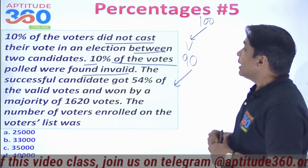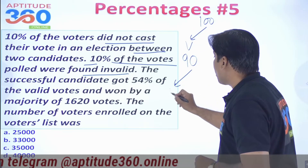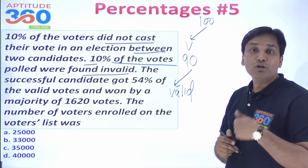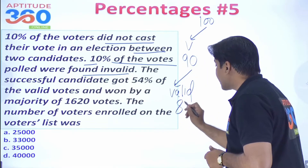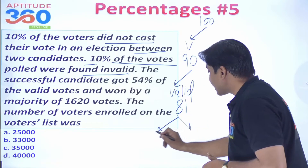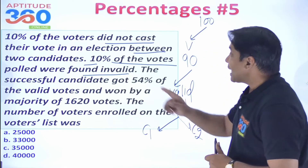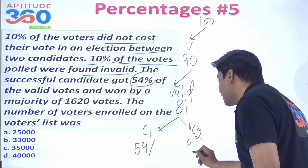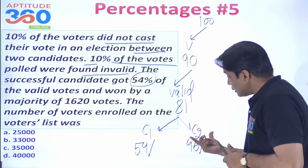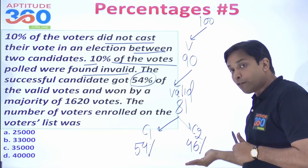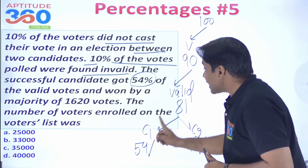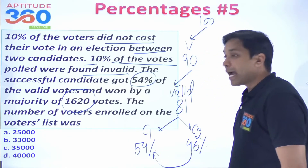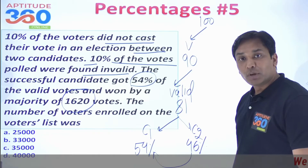Out of 90 who voted, 10% of votes were invalid — that is 9 invalid votes. So valid votes = 81. Candidate 1 gets 54% of 81, candidate 2 gets 46% of 81. The margin is 8% of 81.